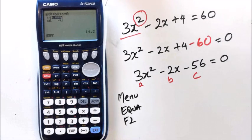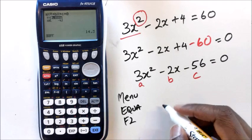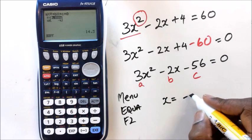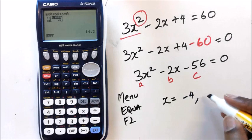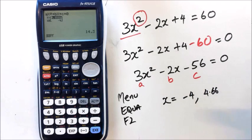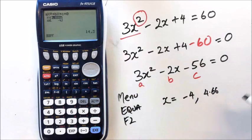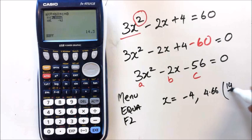Now, what you have is, you've actually got 2 solutions for x. So x is equal to 2 solutions. Your first one is negative 4, and your second one is 4.66 recurring. Now, of course, the good thing about solving it this way, is you're actually given this in a factor format. So 14 over 3 is just another way of writing your answer.